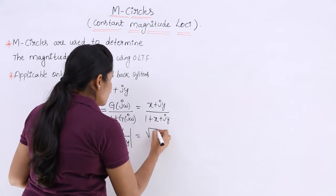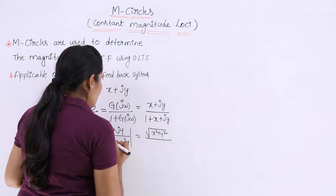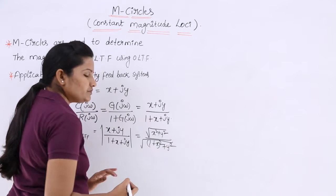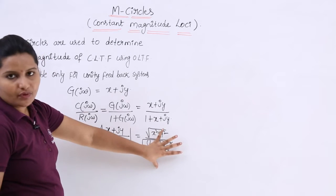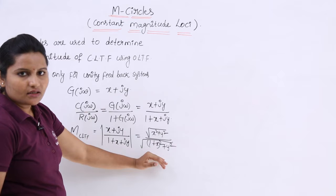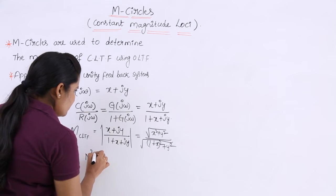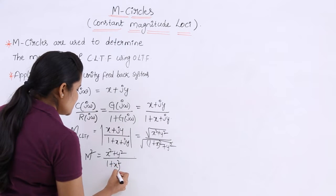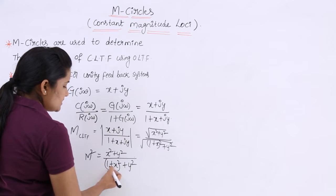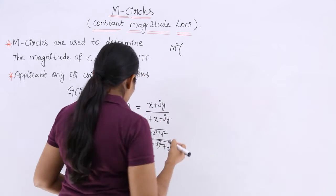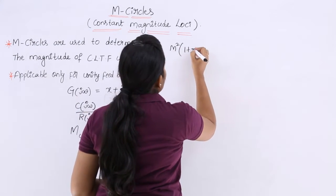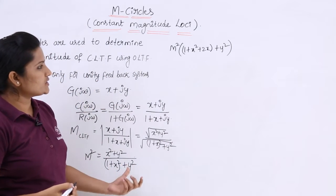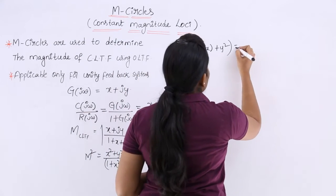This is equivalent to the square root of (x² + y²) divided by the square root of (1 + x)² + y². Setting this equal to M and squaring both sides, we get M² equals (x² + y²) divided by [(1 + x)² + y²].